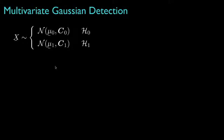In general, a multivariate Gaussian hypothesis test will decide between two Gaussian models. For hypothesis 0, we'll have a mean mu0 and a covariance matrix C0. And for hypothesis 1, we'll have a mean mu1 and a covariance matrix C1.